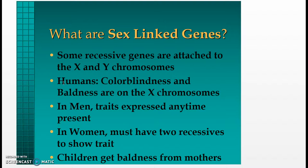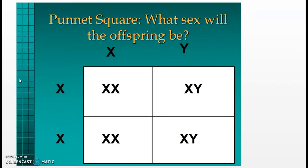What are sex-linked genes? Some recessive genes are attached to the X and Y chromosomes. In humans, color blindness and baldness are on the X chromosomes. In men, traits are expressed anytime they are present; in women, they must have two recessives to show the trait. Children get baldness from their mothers. In this Punnett square showing what sex the offspring will be, with the male parent XY and the female parent XX, mated together you have a 50% chance of female offspring and a 50% chance of male offspring.